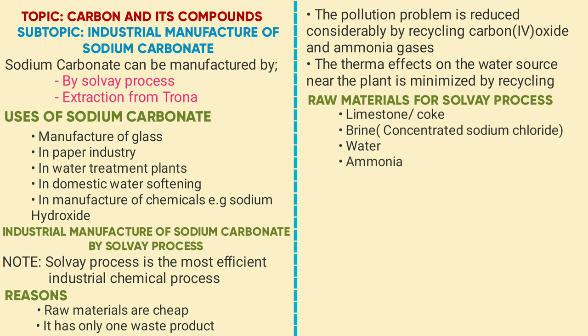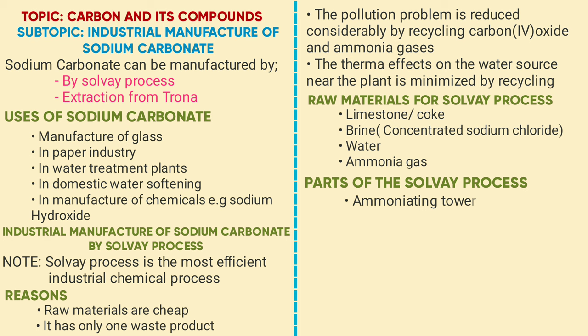Parts of the process include the ammoniation tower, carbonator (also called the Solvay tower), filters, kiln, ammonia generator, roaster, and slaker.